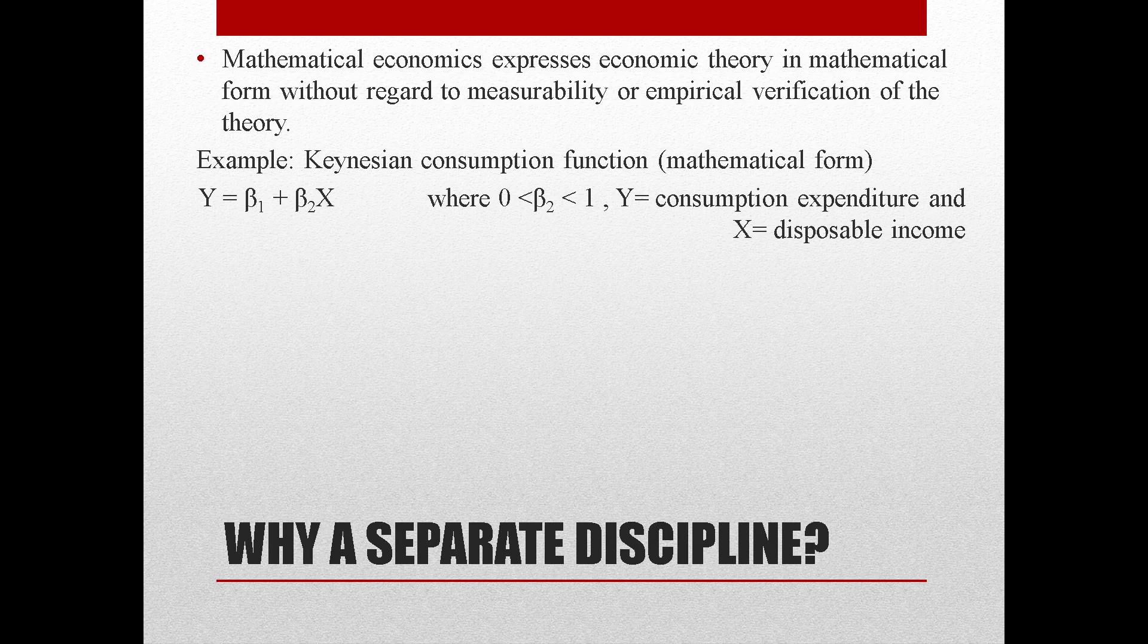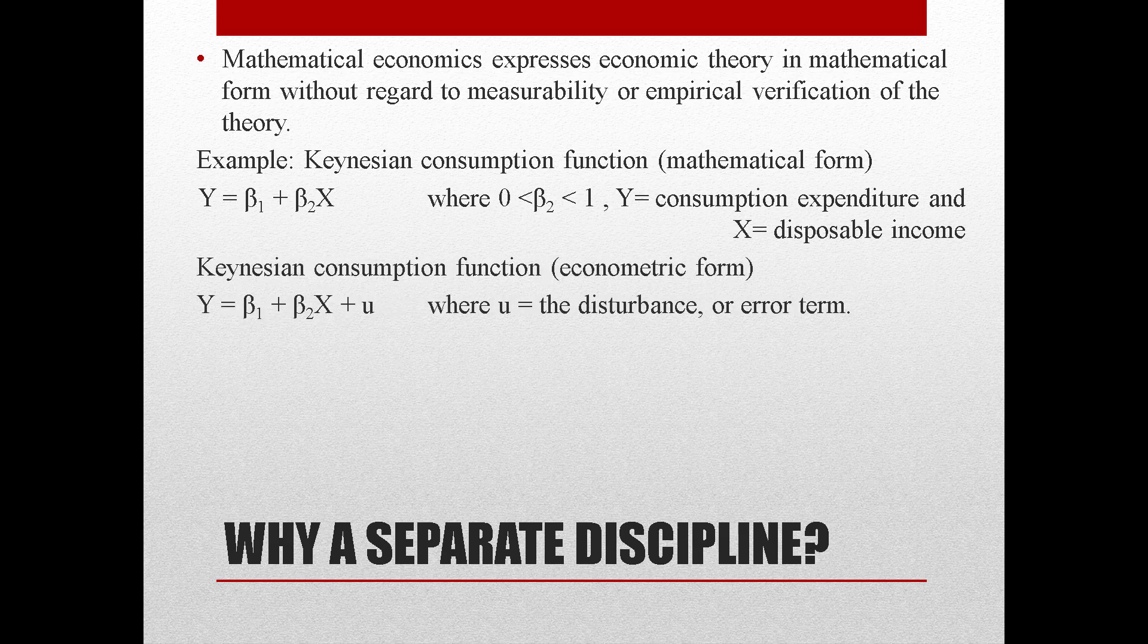So the econometrician uses the mathematical equations and modifies the equations in such a form that they lend themselves to empirical testing. So this is the econometric form of this equation: Y = β₁ + β₂X + u, where this term is introduced—that is, u, which is the disturbance or error term.